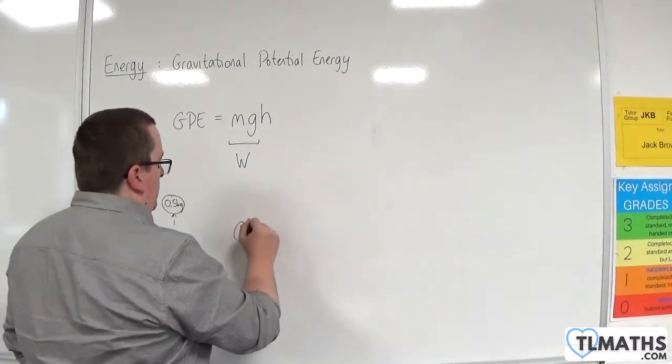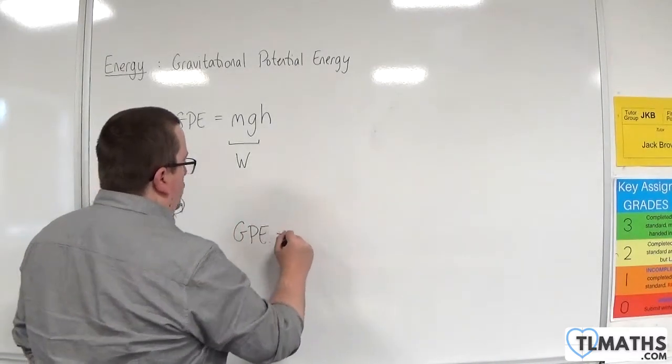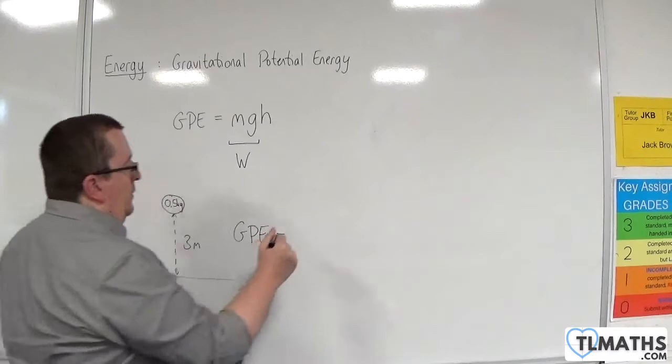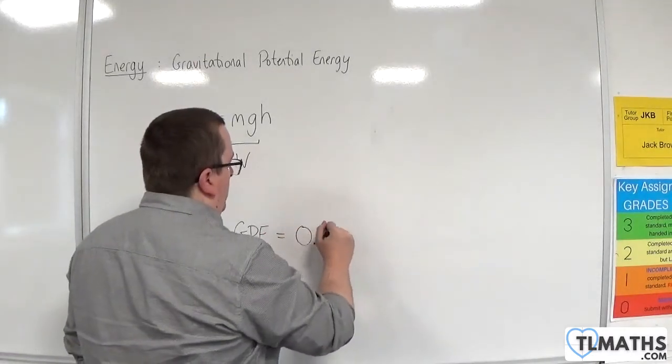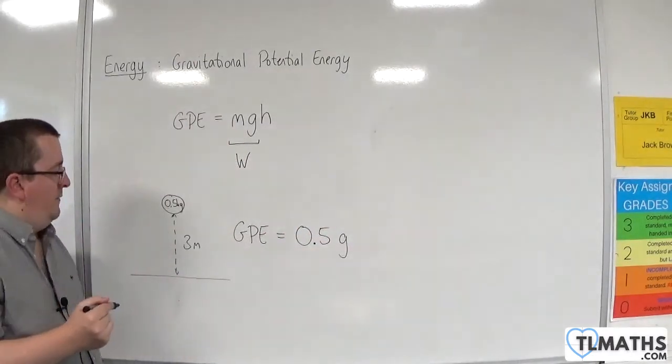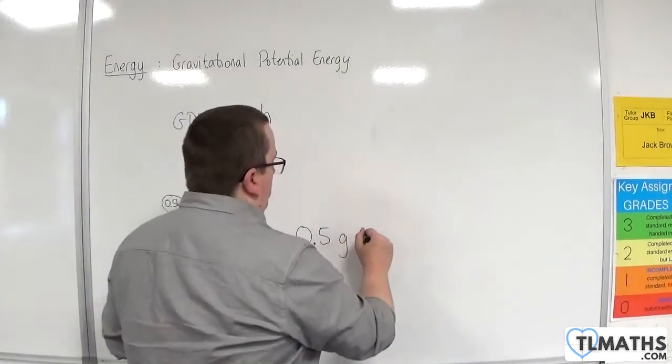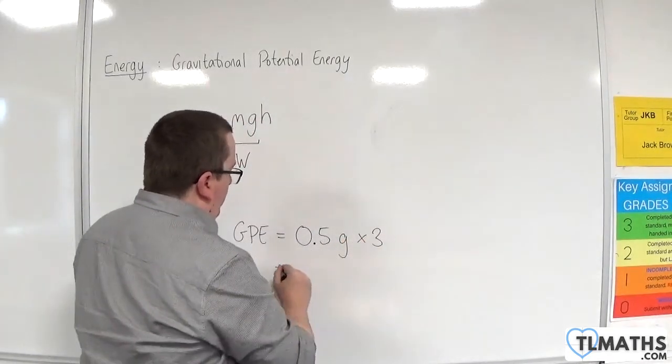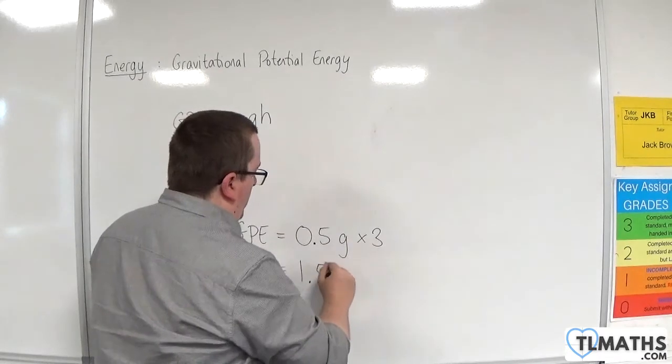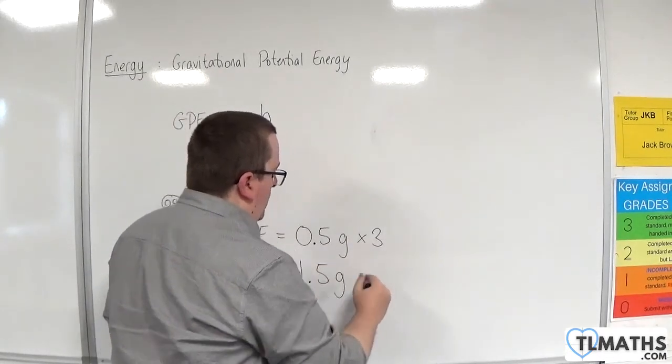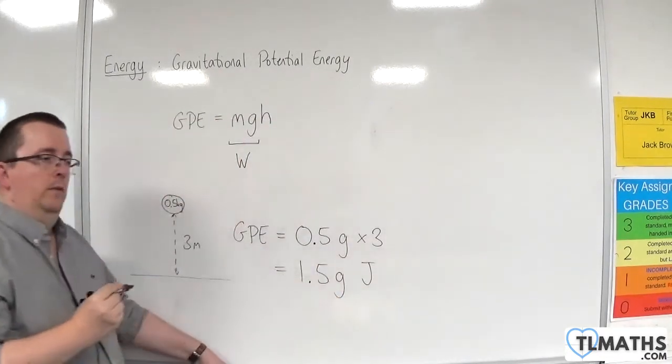So, the gravitational potential energy would be the mass, 0.5, times by g, the acceleration due to gravity, times by 3. So, this would be 1.5g joules.